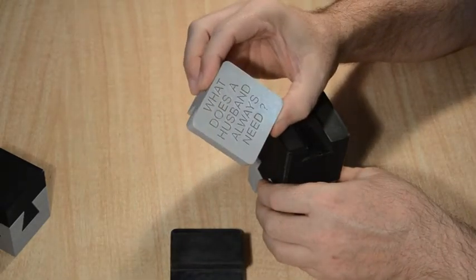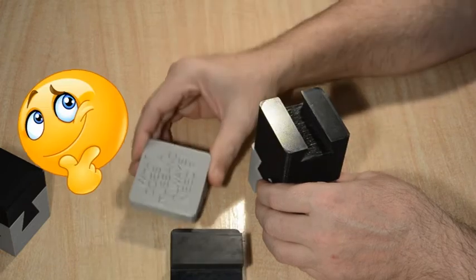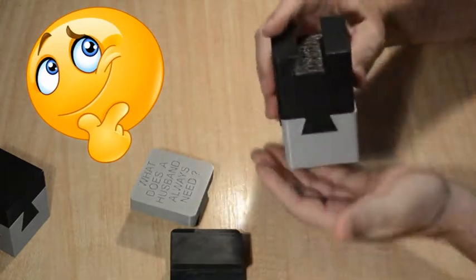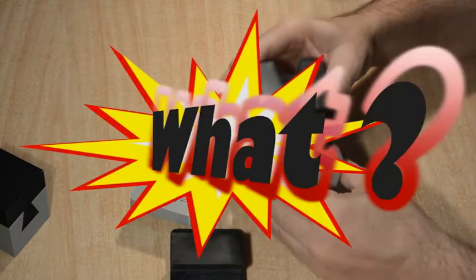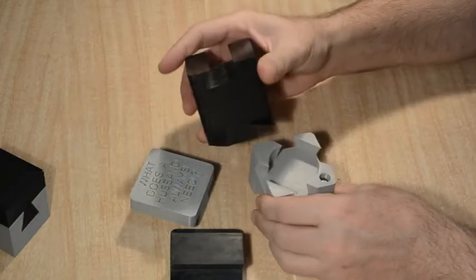Finally, the words on top, 'what does a husband always need,' give the remaining clue as to the final step of the puzzle, in that a smack is needed, which dislodges the locking pin and then the puzzle can be solved.